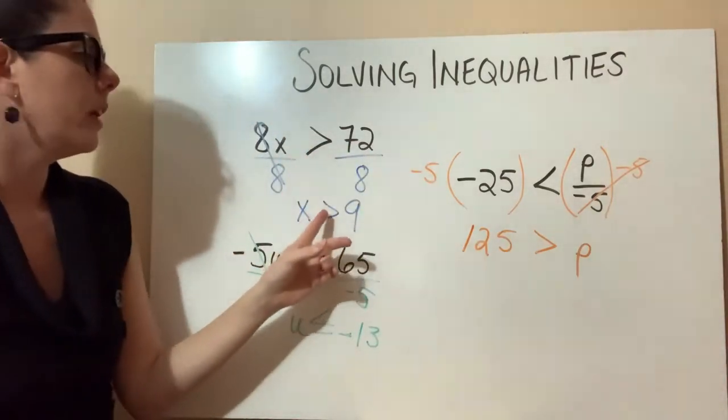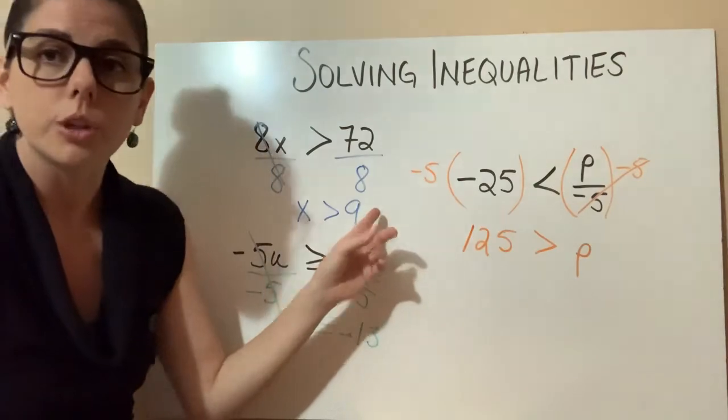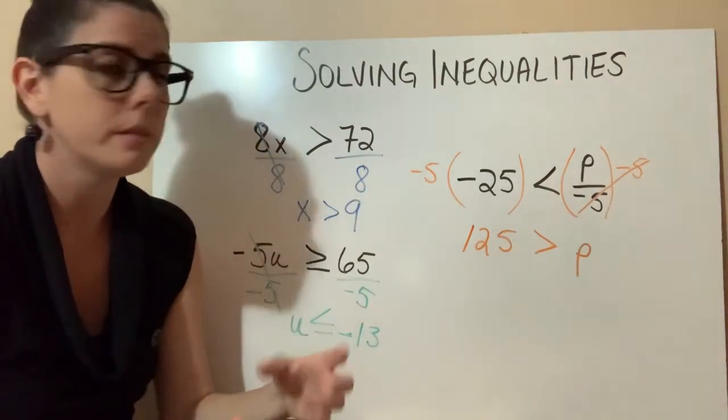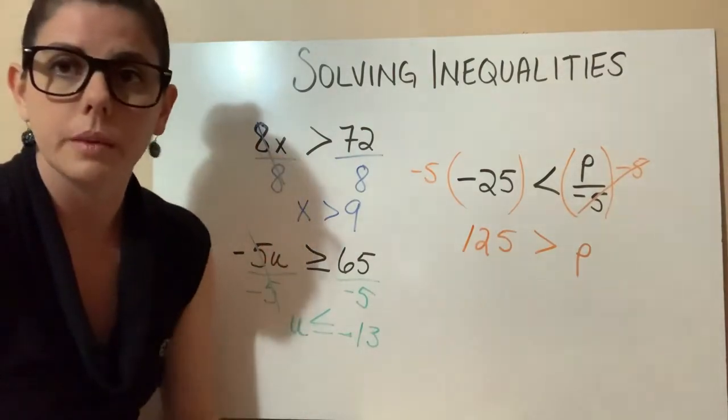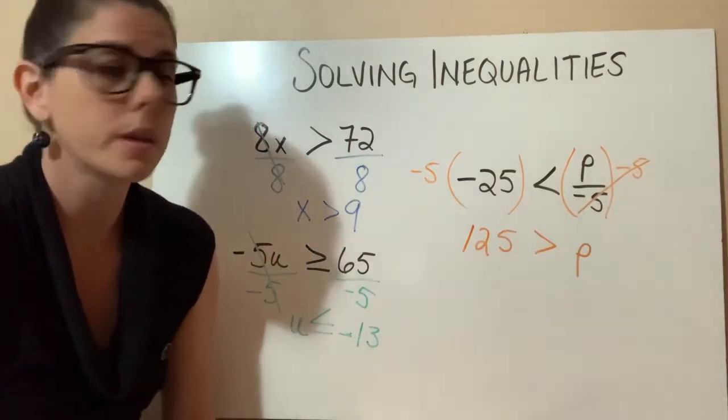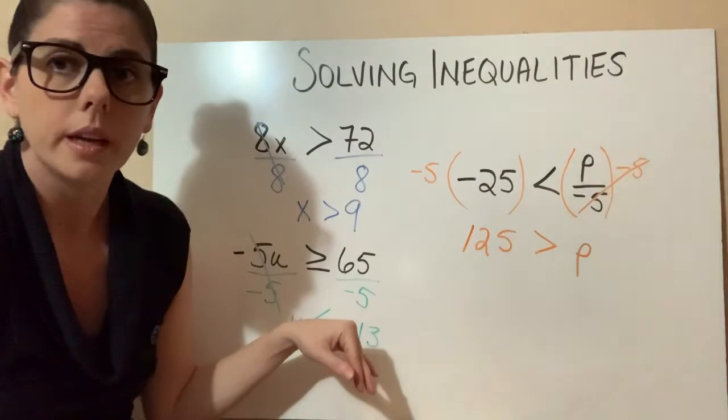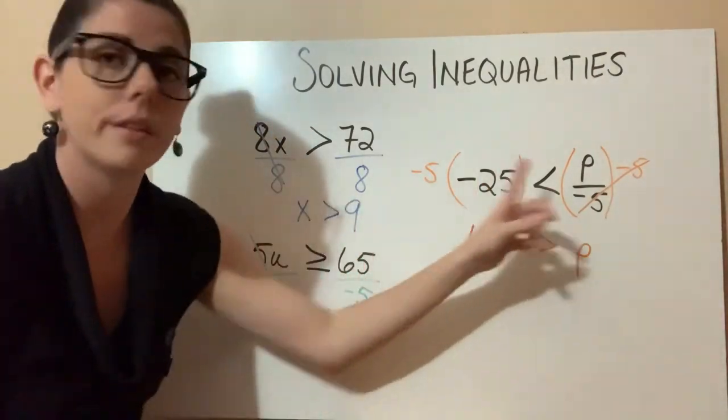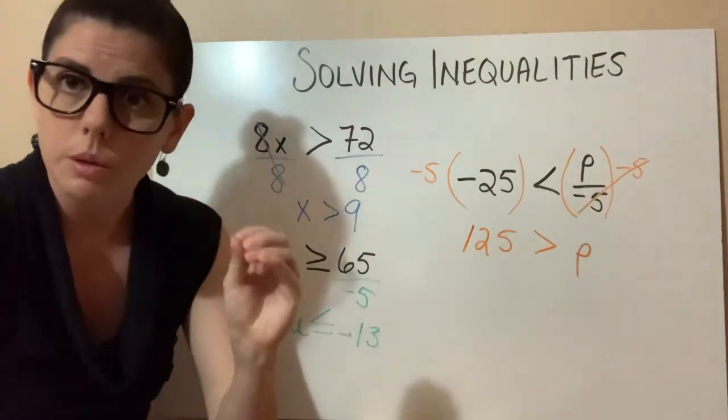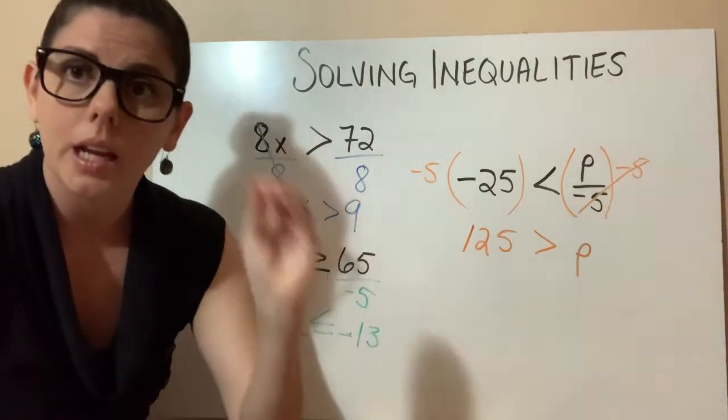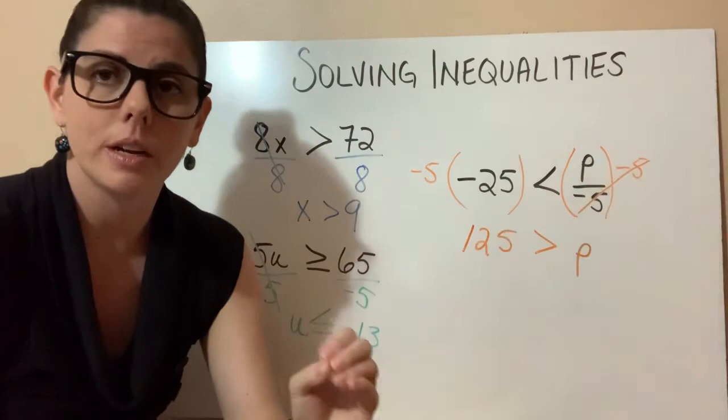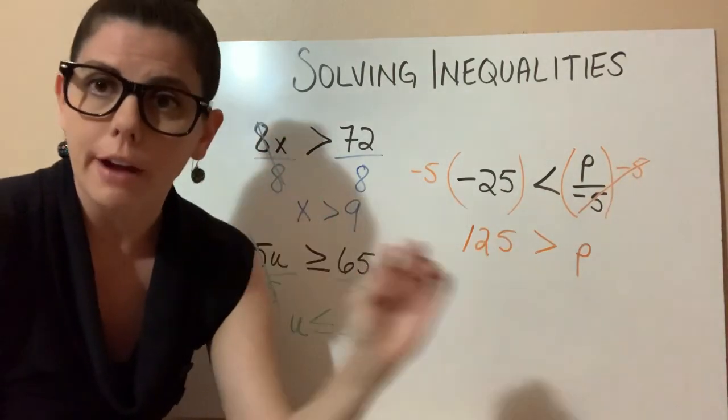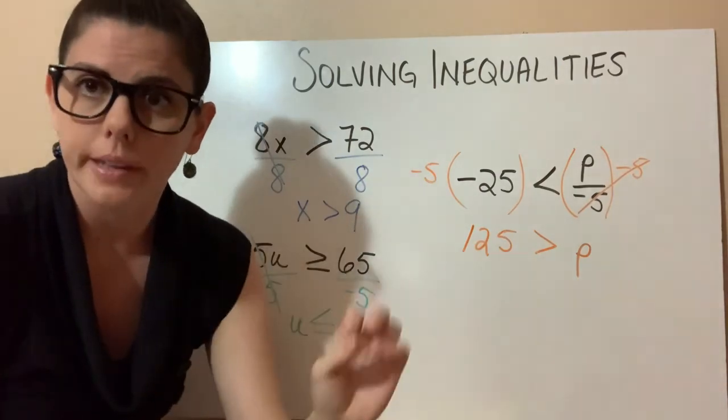You would certainly go ahead and graph these out and write it in interval notation. We've had some examples on that in the previous videos, but this is just to demonstrate that rule you need to remember when you're working with inequalities. When you're dividing or multiplying by a negative number, remember to flip that sign so that you can graph it correctly and get the correct interval notation.